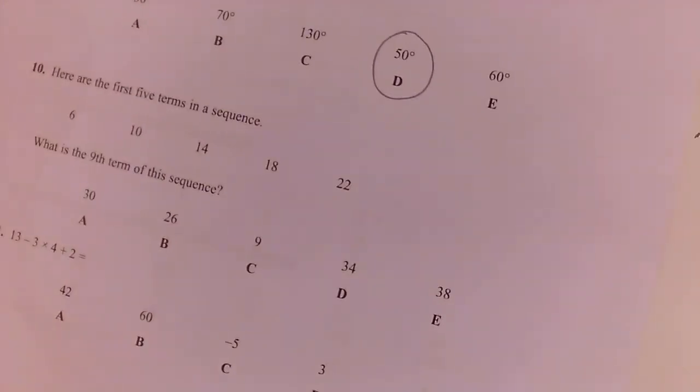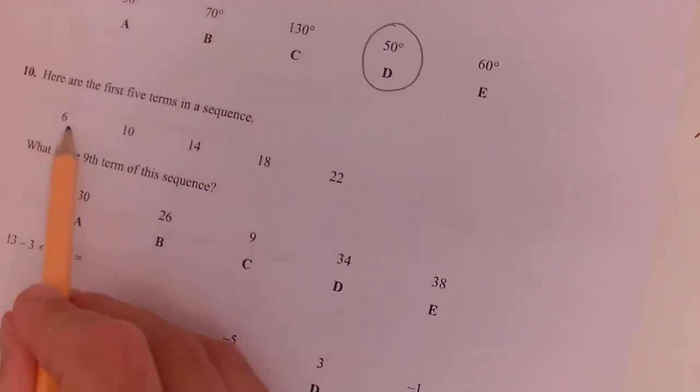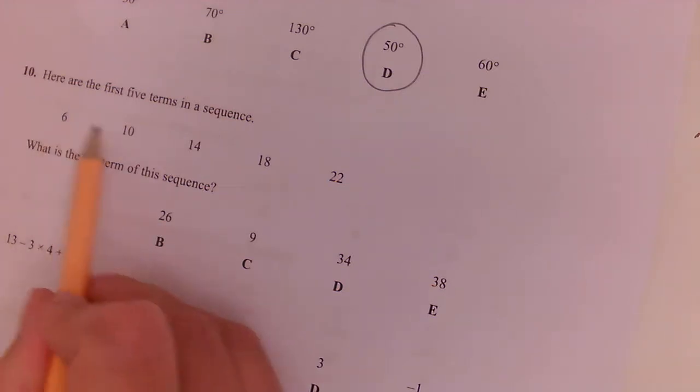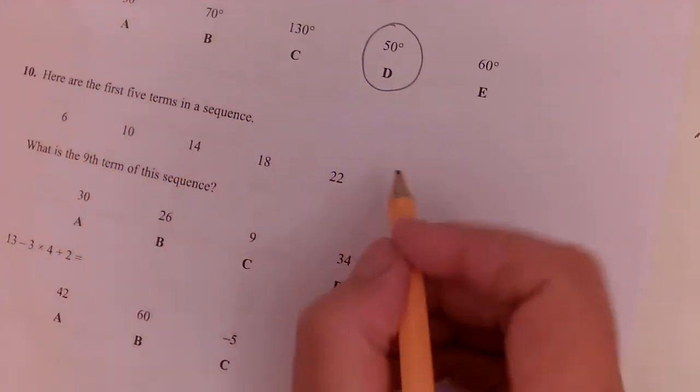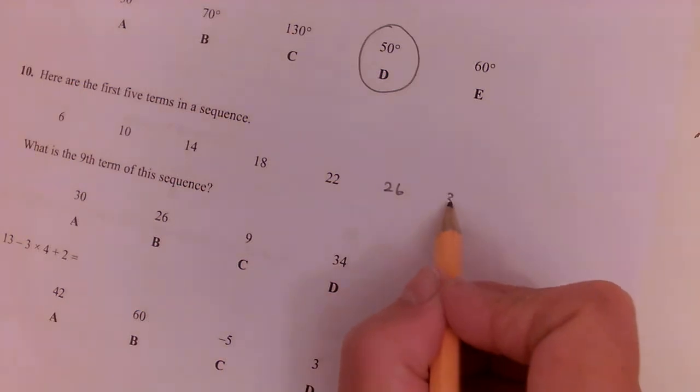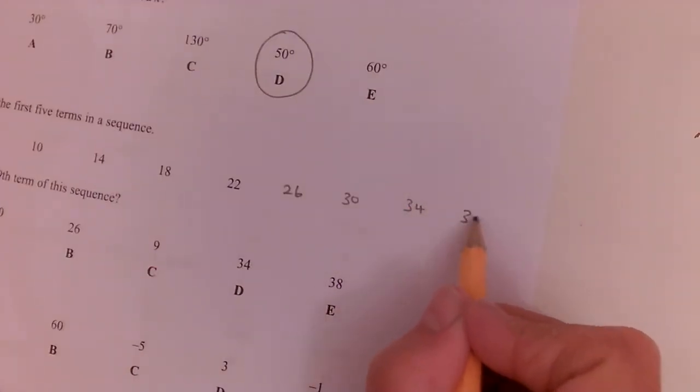Question ten. Here are the first five terms in the sequence. So we're adding on each time. We're adding on four. So one, two, three, four, the fifth term, the sixth term, the seventh term, the eighth term, and the ninth term.